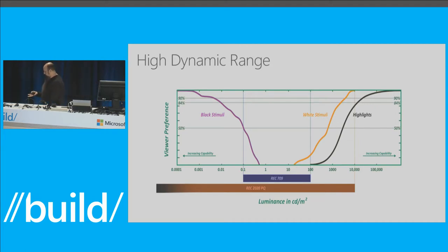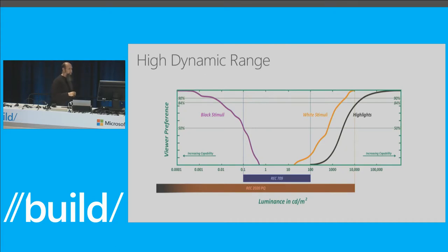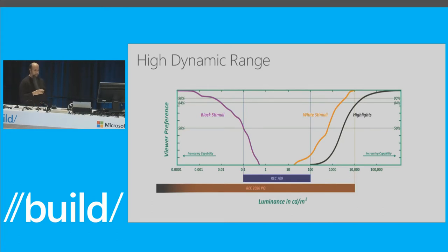When we talk about high dynamic range, today we use the rec 709 standard for color calibration, which defines a luminance level effectively between 0.1 and 100 nits — the standard we've been using for 50-plus years with televisions. With HDR and the new rec 2020 standard, we can go as low as 0.001 all the way up to 10,000 nits. The earliest HDR displays range somewhere between 2,000 and 4,000 nits, with more displays expected to have higher nit counts over the next couple of years.